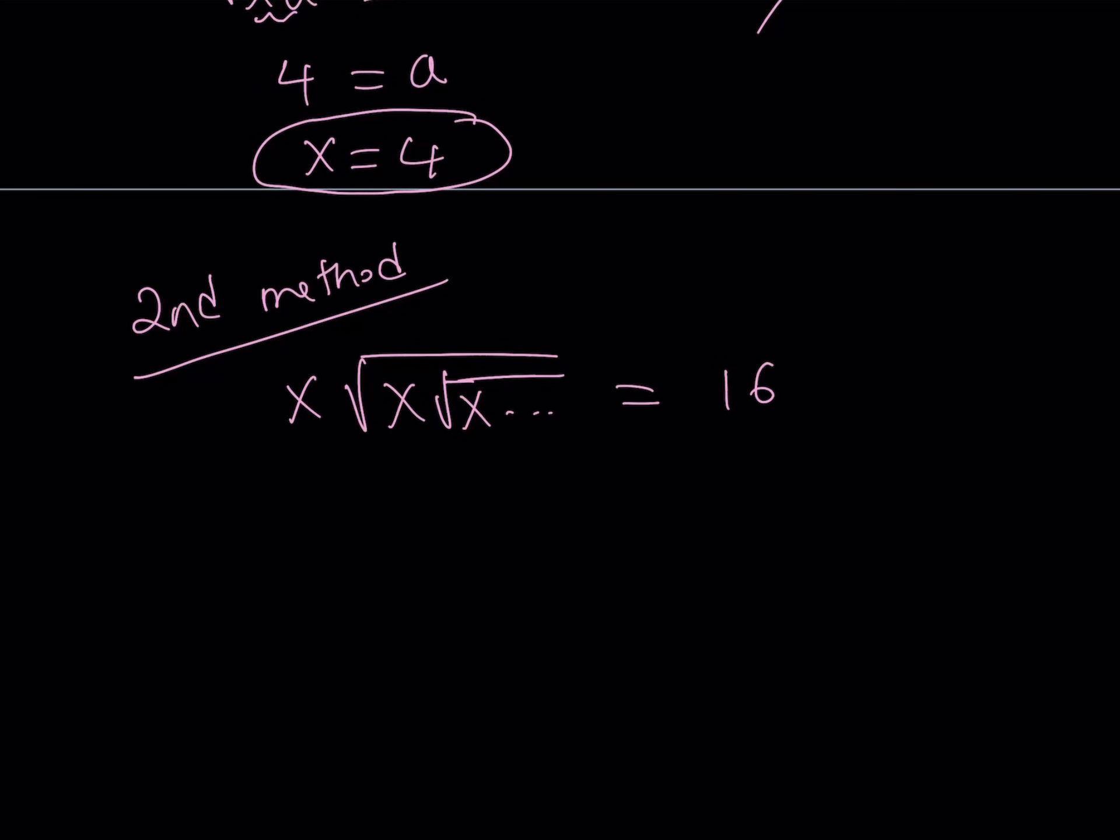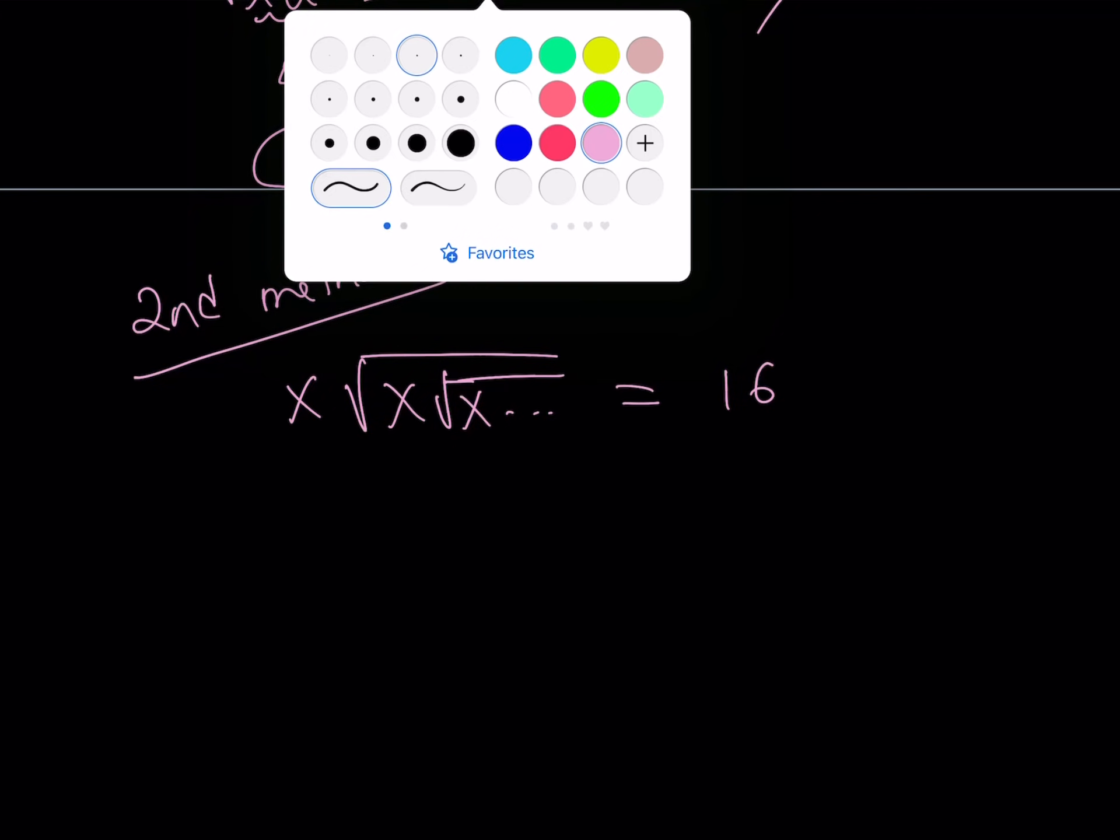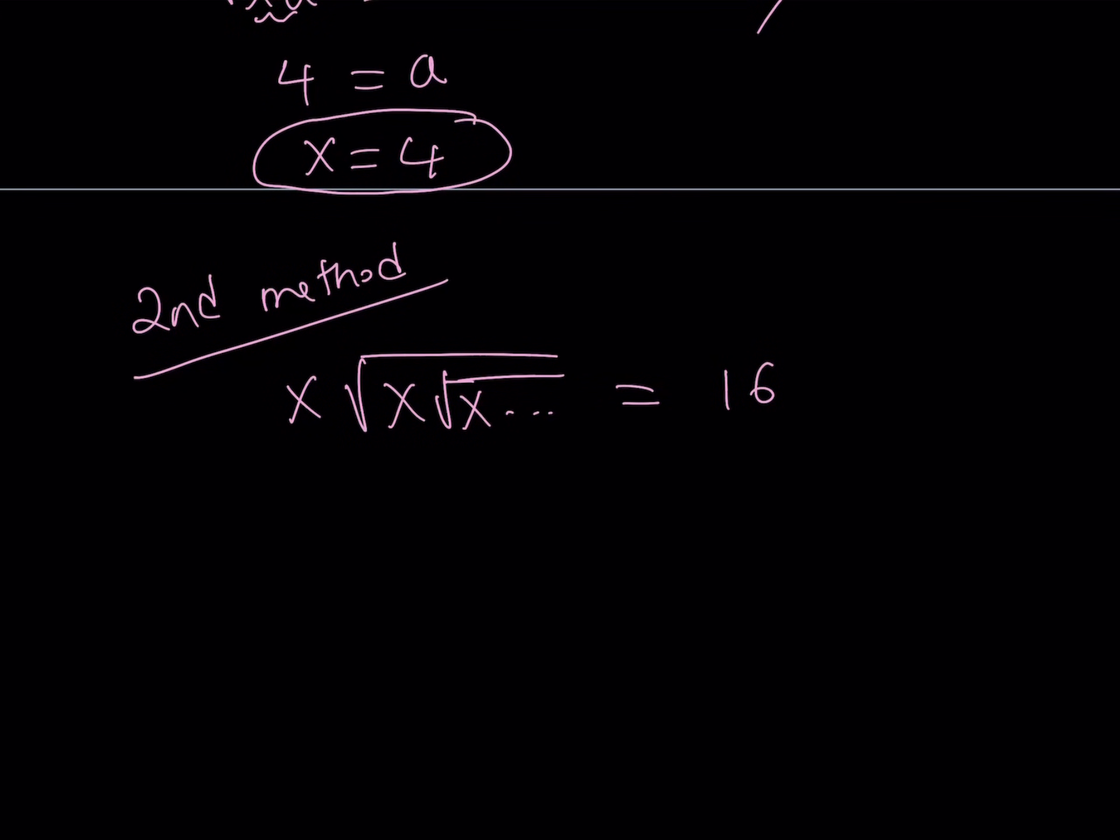The second method involves square rooting both sides. And the reason for that, the motivation behind it is, I want to make this more like a pattern. So if I take the square root of both sides, then I get something that I'm more familiar with, right? The square root of x times the square root of x times the square root of x. Something that repeats infinitely many times. And this is obviously equal to 4.